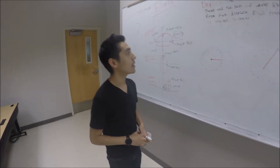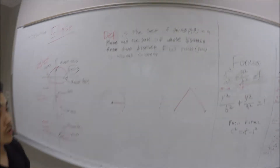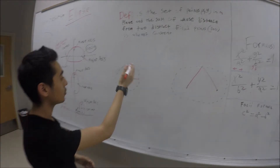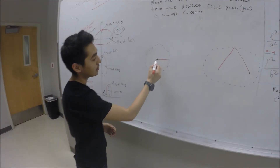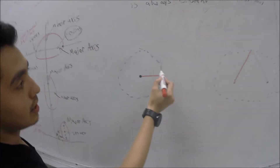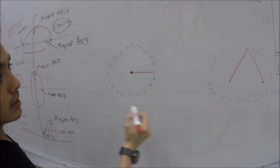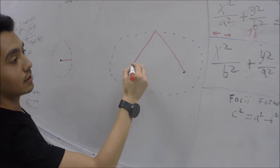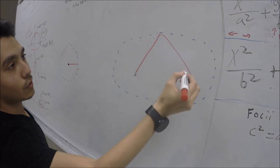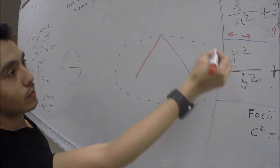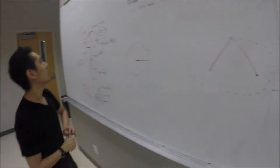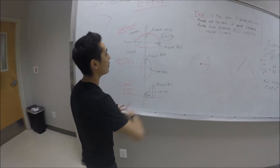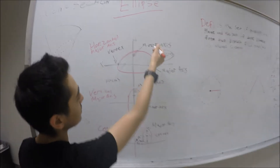A circle is a set of all points in a plane equidistant from a fixed point called the center. A circle is a figure that can be formed by slicing a three-dimensional cone with a plane. There are three different ways to do this and each way uses a different figure.